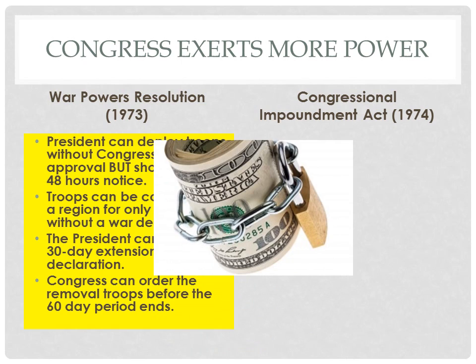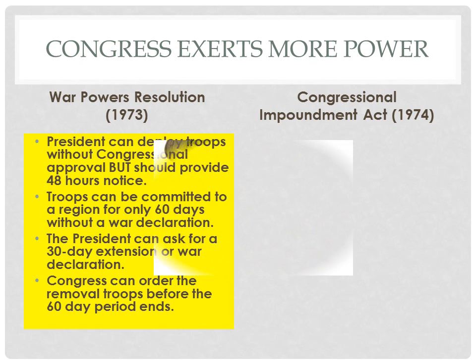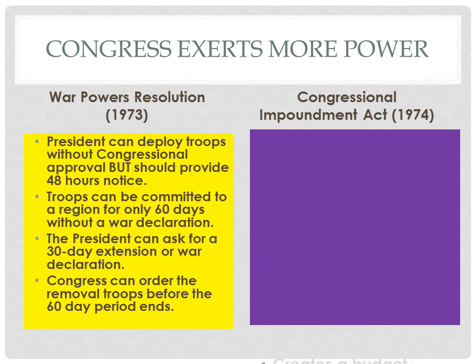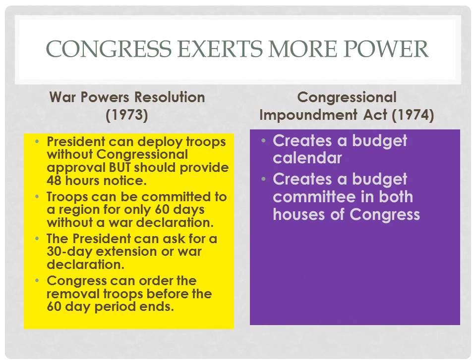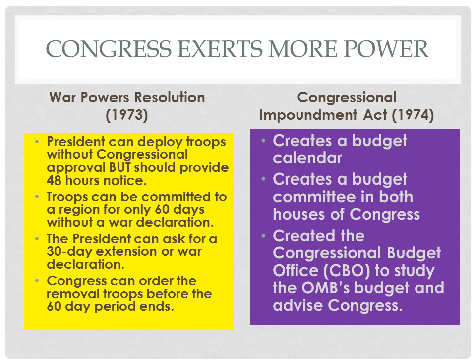In terms of money, presidents have tried to impound funds that Congress had already allocated for political reasons. With the passage of the Congressional Impoundment Act, this was clarified with provisions such as a fixed budget calendar, both houses of Congress having their own budget committees, and the CBO studying the budget handed down by the president and his OMB to make sure that it is carefully planned out.